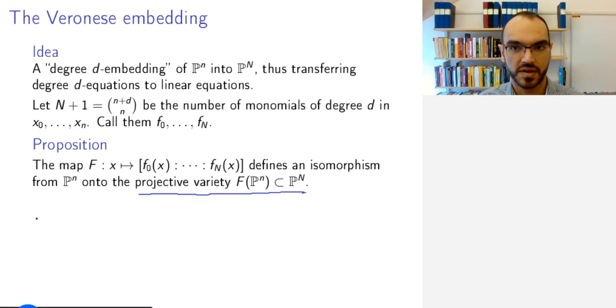It is so because among these f_0 to f_N are the standard monomials. So observe that x_i^d where i goes from 0 to n is a subset of the set of these f_0 to f_N.